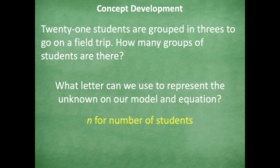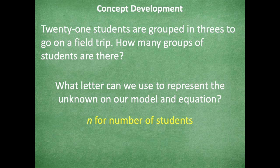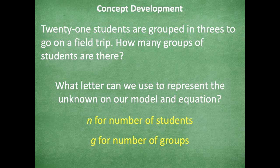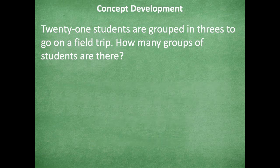So what letter can we use to represent the unknown and model our equation? We could use n for like the number of students, but that might get a little tricky because it tells us we have 21 students. So I'm thinking maybe g for the number of groups. What do you guys think makes more sense? N for number of students or g for number of groups? Ah, g for number of groups. I tend to agree with that because that matches what the question is asking us.